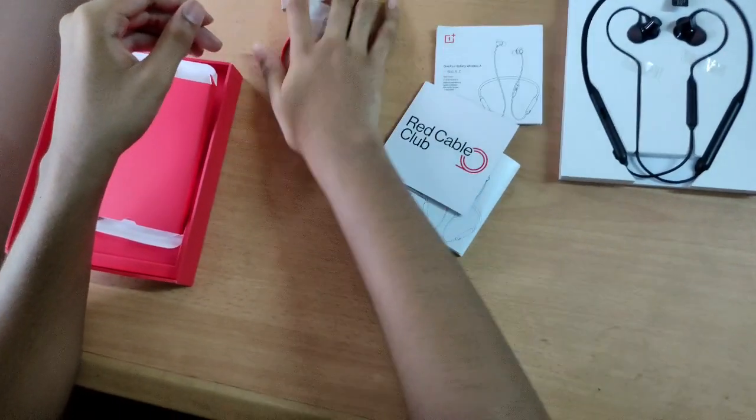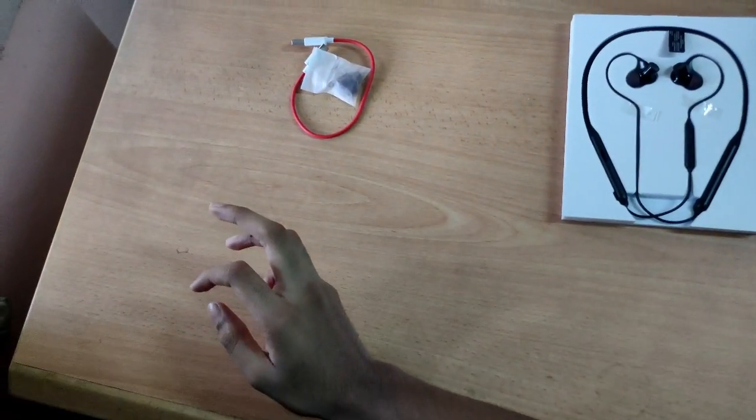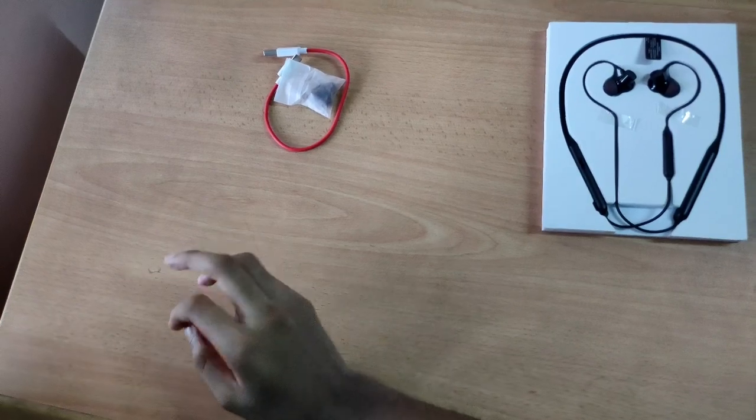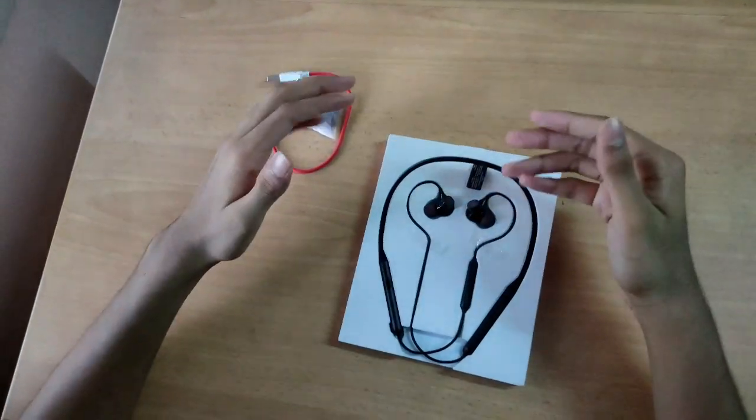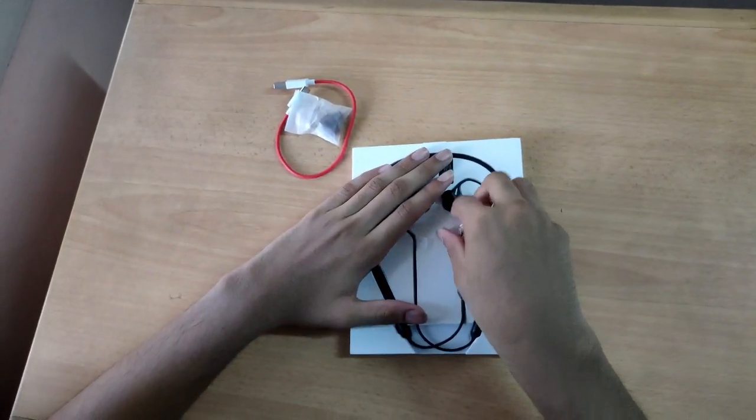Let's go to the headset now. Here you go, this is the OnePlus Wireless Z. Let's take it out.